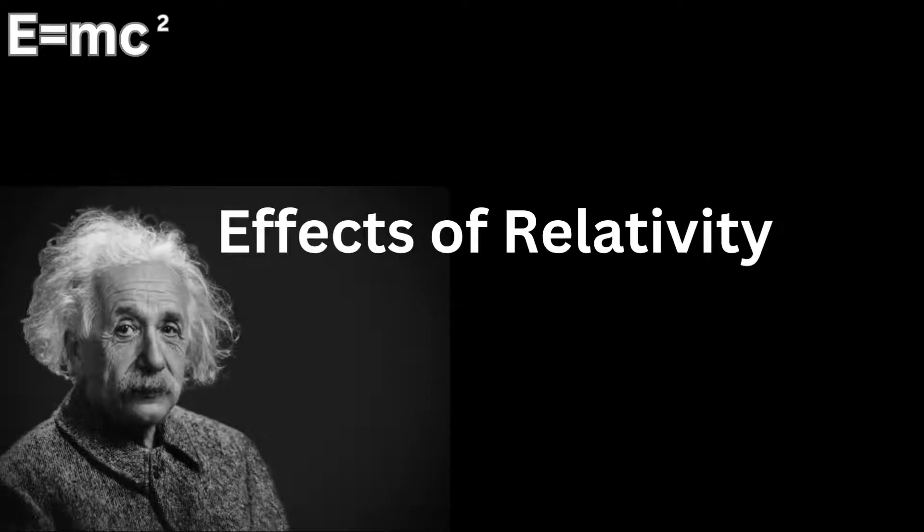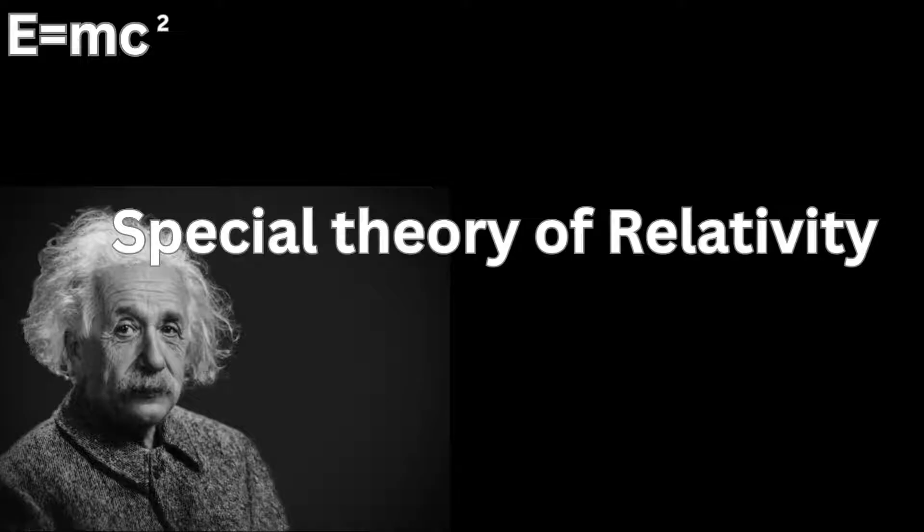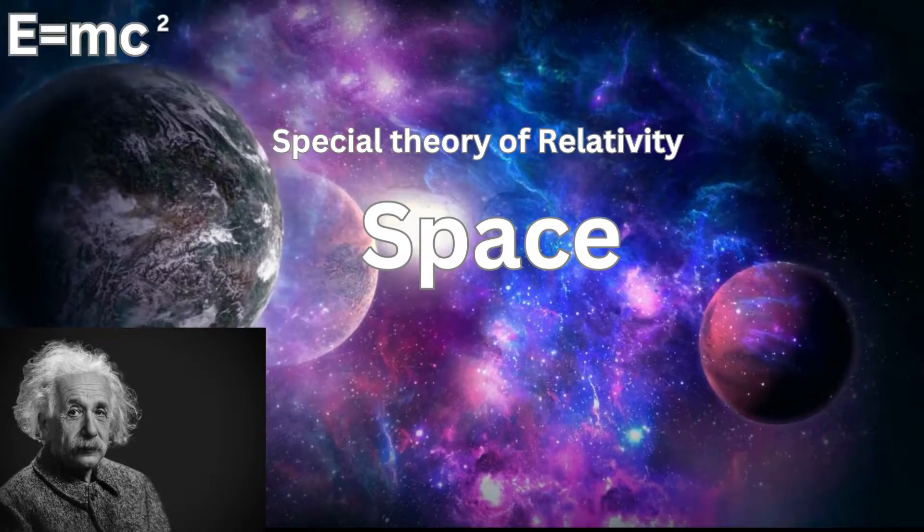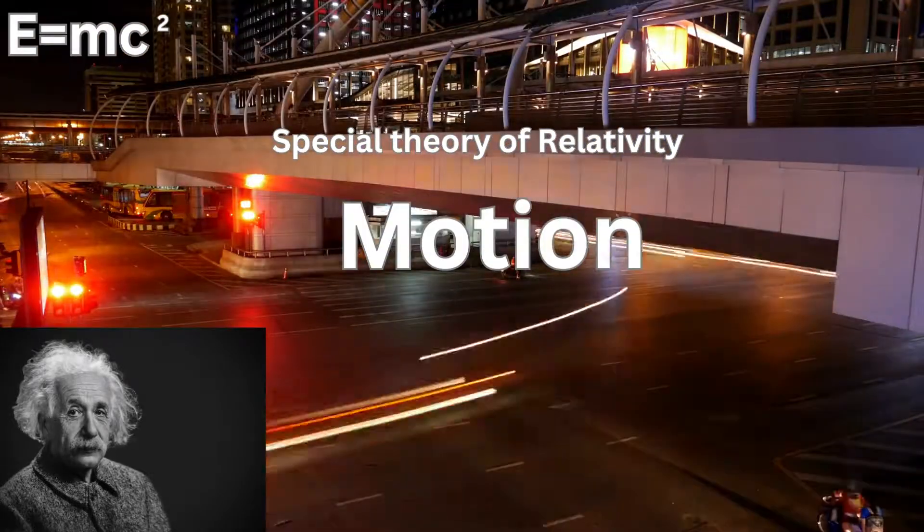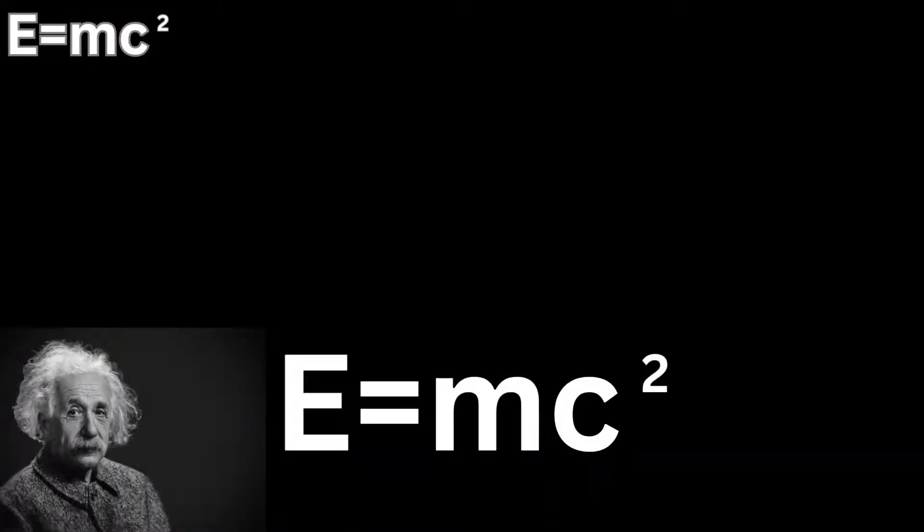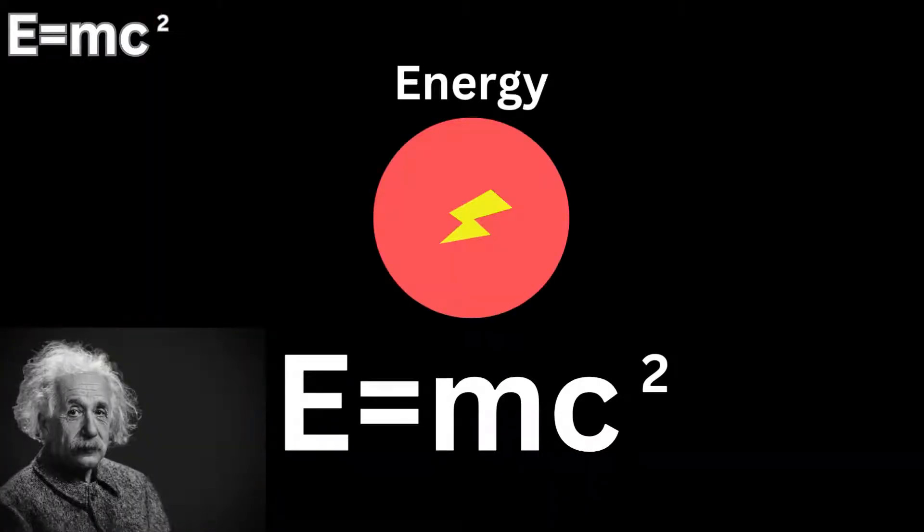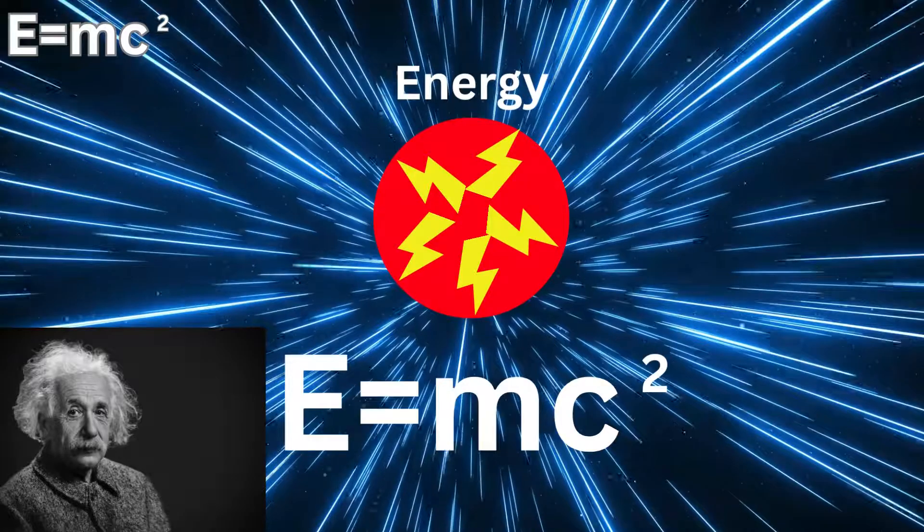3. Effects of relativity. Einstein's special theory of relativity, which transformed how we think about space, time, and motion, is where the equation comes from. It illustrates how an object's energy content rises noticeably when it approaches the speed of light.